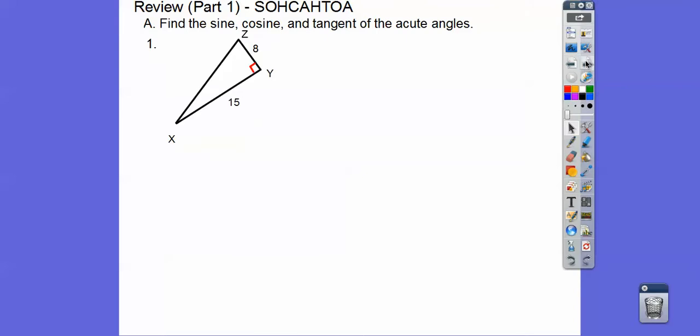Find the sine, cosine, or tangent of the acute angles. We're going to find the sine of x and the sine of z, the cosine of x and z, and the tangent of x and z, these two acute angles. Now the 17 wasn't there, you had to figure it out. It's an 8, 15, 17 right triangle, or you could have done 8 squared plus 15 squared equals x squared, you still would have got 17.